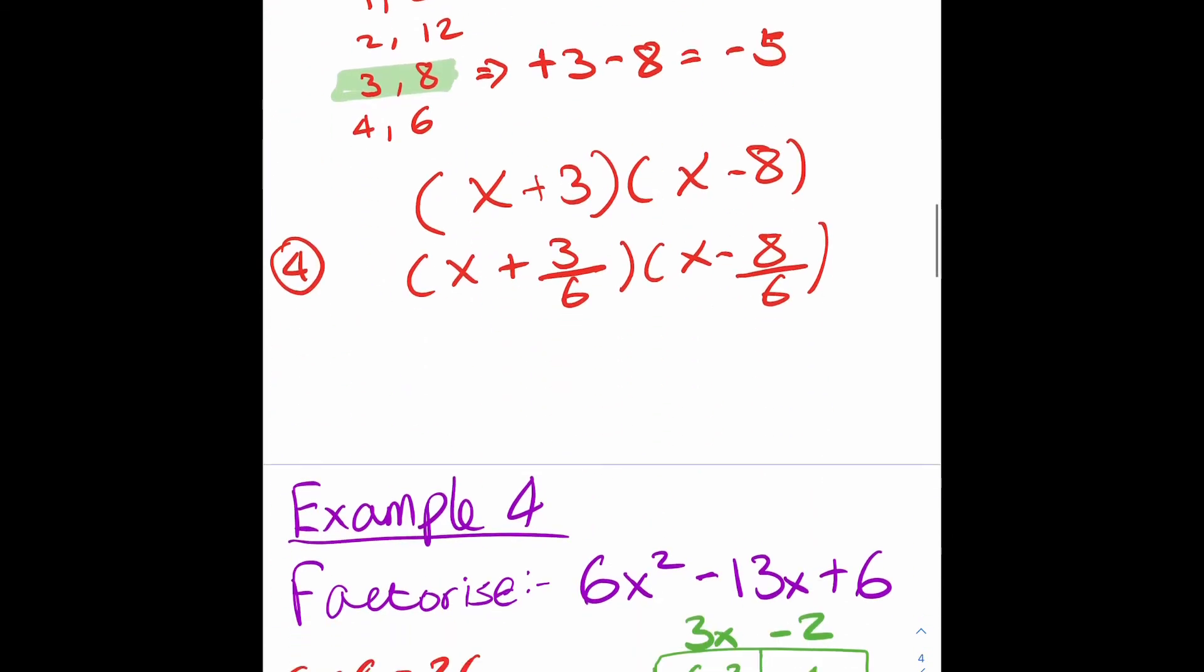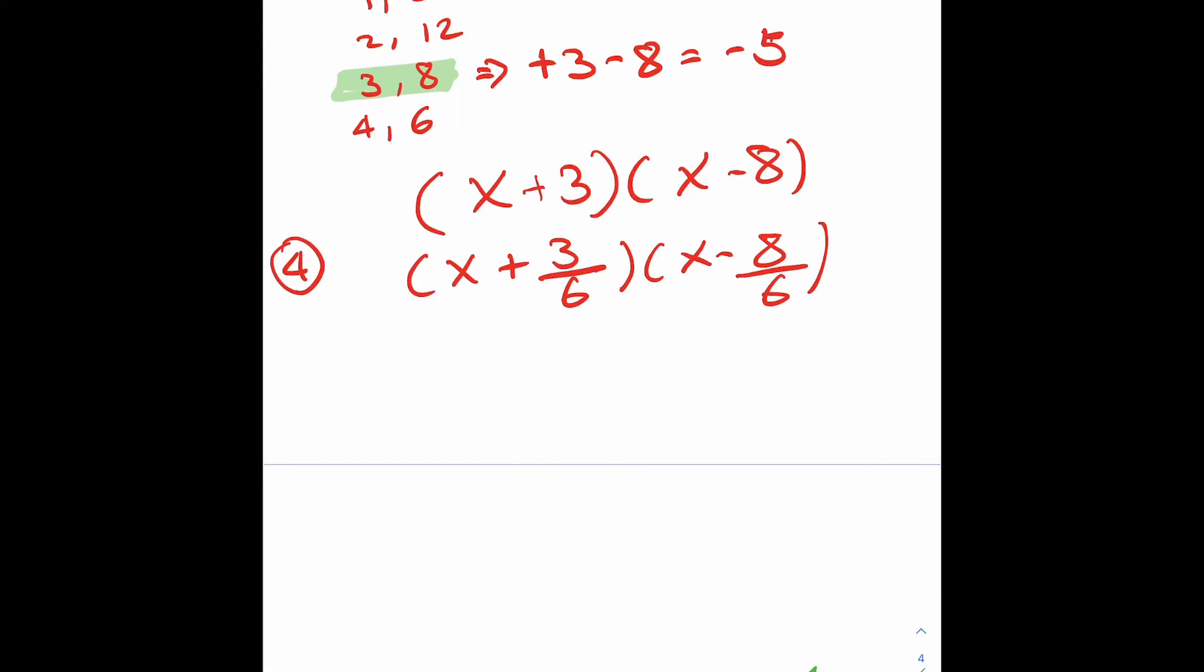So I can now list my factorization, which is x add 3 and x take away 8. Step 4, I'm now dividing by the 6 that I times by to start with, the number in front of x squared. So I've got 3 over 6 and 8 over 6 inside the brackets. Step 5, I need to simplify. Do not forget this step, very important.